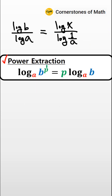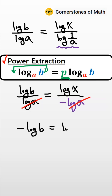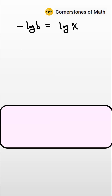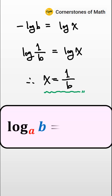Then, by the properties related to the power, we know that log 1 over A is equal to minus log A. So cancelling log A, we have minus log B equals log X. Therefore, we have log 1 over B equals log X. Therefore, X equals 1 over B.